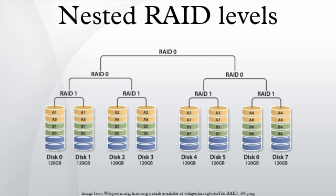One drive from each of the RAID 5 sets could fail without loss of data. However, if the failed drive is not replaced, the remaining drives in that set then become a single point of failure for the entire array. If one of those drives fails, all data stored in the entire array is lost.